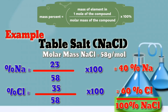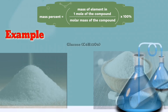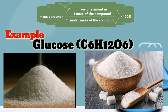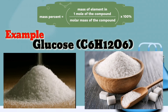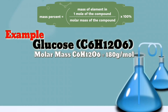For our next example, we have glucose, or C₆H₁₂O₆ — that is our table sugar. Now let's solve for the percentage composition of carbon, hydrogen, and oxygen in the compound.